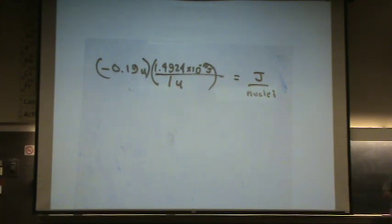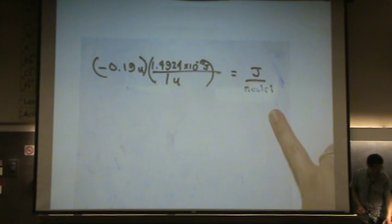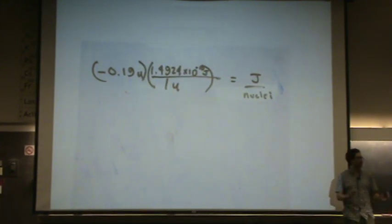So either way, or you can move on from u to mega electron volts, whatever the problem specifies. You would still have to, from here, go to per one gram of it. So you'd still have to do that very last conversion.